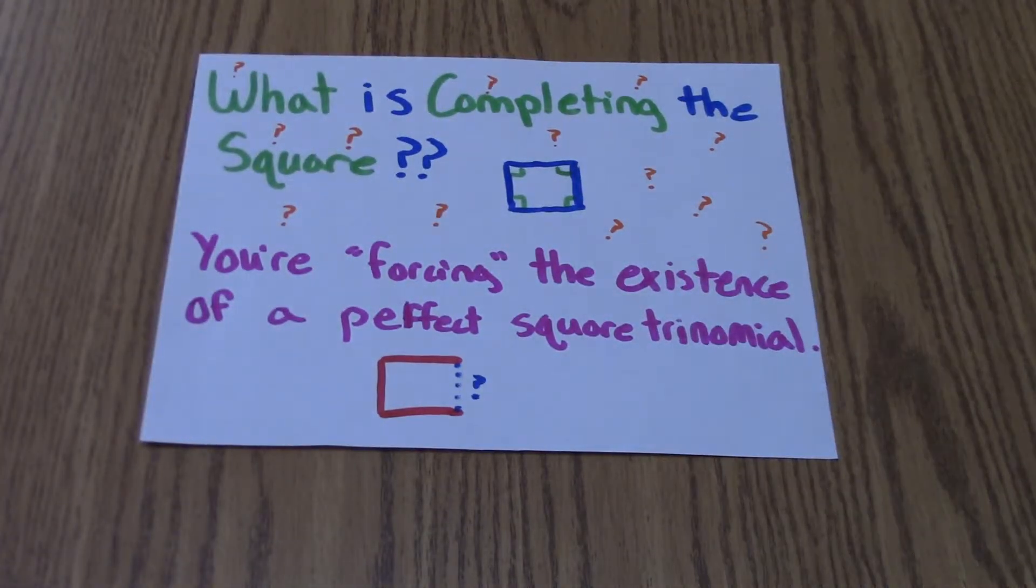What is completing the square, you may ask? Completing the square is when you force the existence of a perfect square trinomial.